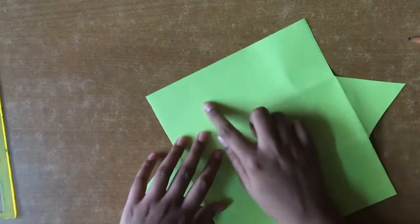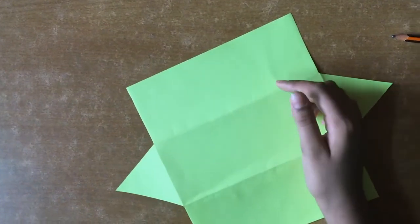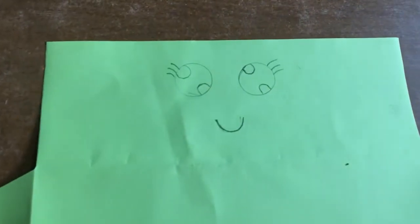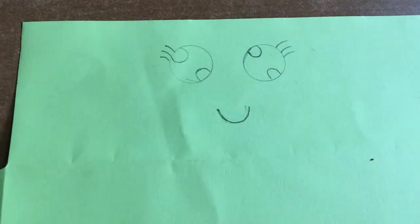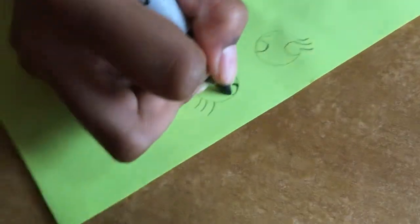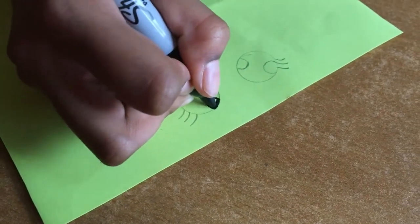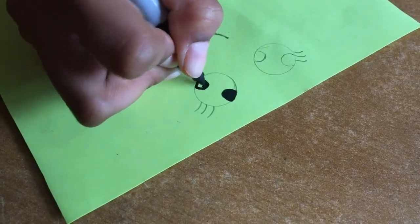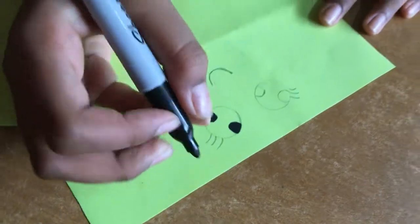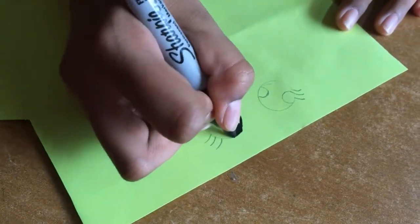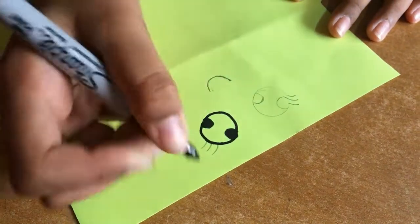Now we take one side over here and draw any face you want. So see you guys, I drew like this. Now take black marker and color it. With black and whitener you can color. It's according to your drawing, which emoji you are drawing. According to that you can do it.